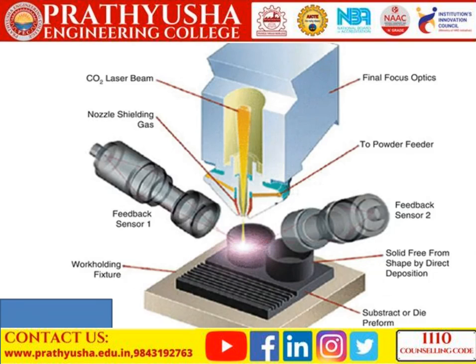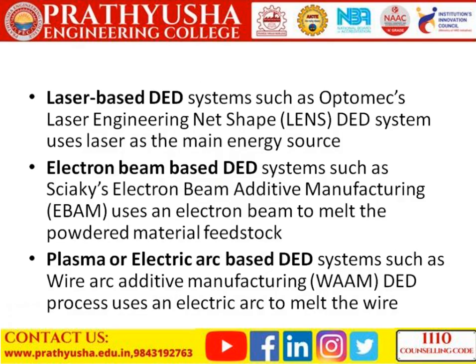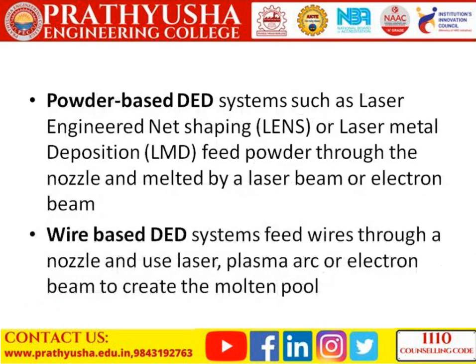The types of direct energy deposition are: laser-based direct energy deposition; electron beam-based direct energy deposition, which uses an electron beam to melt the powdered material feedstock; and plasma or electric arc-based direct energy deposition. These are classified based on the energy source. Additionally, there are powder-based and wire-based direct energy deposition methods.